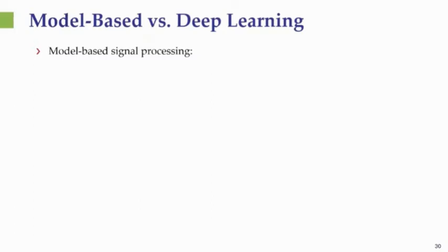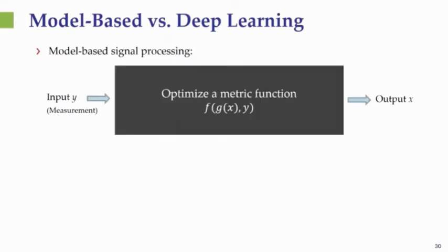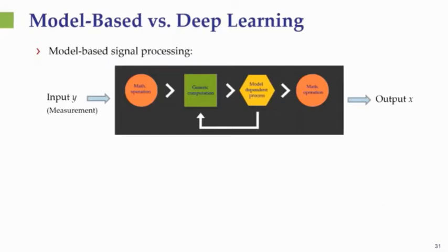To see how we can do this, let's take a bird's-eye view on model-based processing versus deep learning. In a standard model-based method, we have measurements Y from which we want to infer unknown X — in the communication context, Y is the received signal and X the symbols. We use a model relating Y and X to design an algorithm that determines X by optimizing some metric. In deep learning, we do not assume a model; instead we replace it with a black box that learns from many paired inputs and outputs, learning parameters of a network across layers.